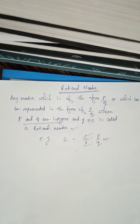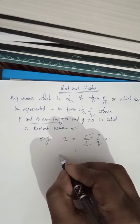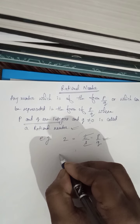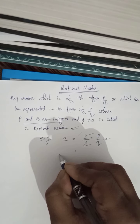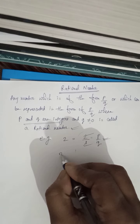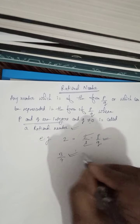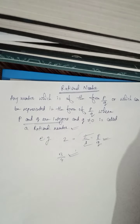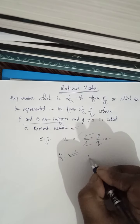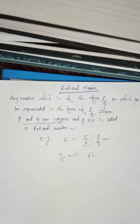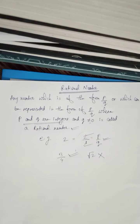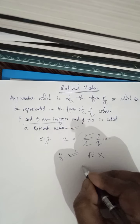So this is a rational number. Another example: 3/4 is also a rational number. Now, is √2 a rational number? No, √2 is not a rational number.